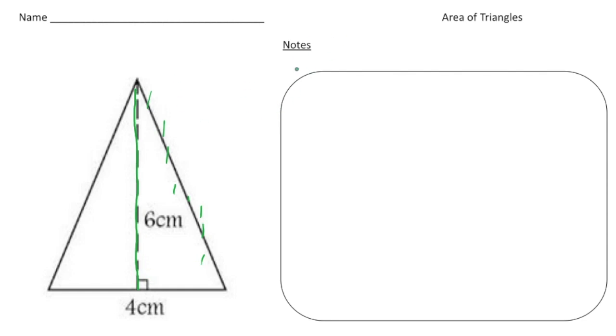So to find the area of a triangle, use the formula area equals base times height, and then divide it by 2.